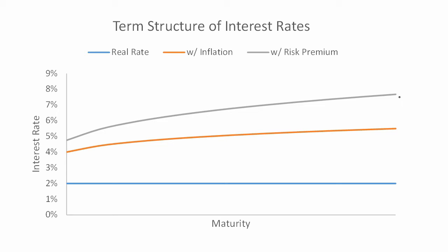The way we think about the term structure of interest rates these days is as follows. If we were to actually pull the data, we would only see one of these lines, and that line is the gray line right there. That actual term structure of interest rates we think of as being composed of a number of different components.